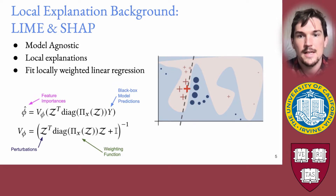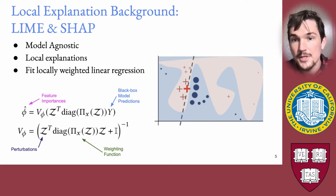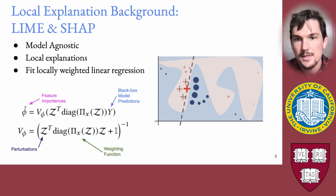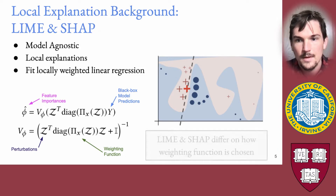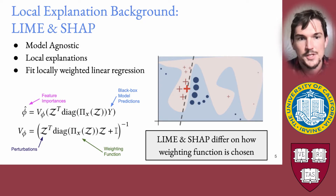If we look on the right-hand side of the slide, you'll see a bold plus sign — this is the point we're trying to compute an explanation for. Both LIME and SHAP will sample a set of perturbations, here represented as the thinner plus signs in circles, and then they'll fit a weighted linear regression using these perturbations. The two methods effectively differ on how this weighting function is chosen.